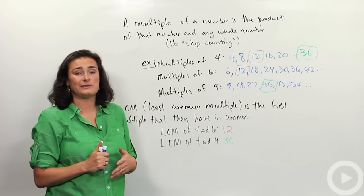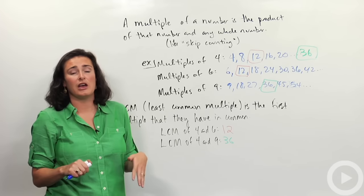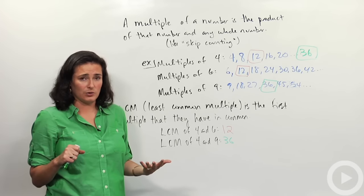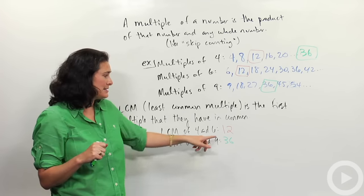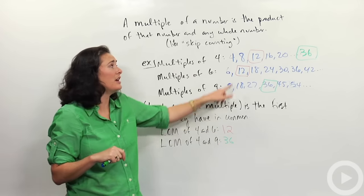But that wasn't the case for 4 and 6. Sometimes that's not true. For 4 and 6, the product would have been 24. But that wasn't the least common multiple. The least one was 12.